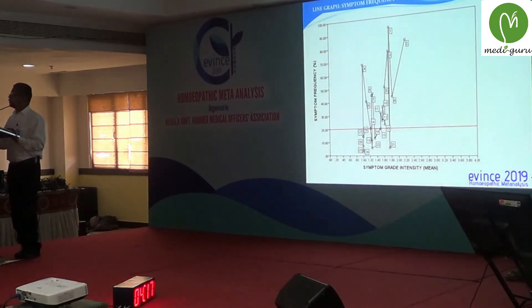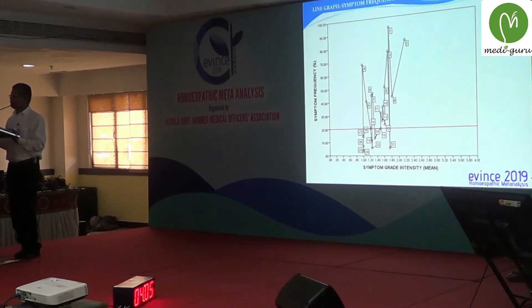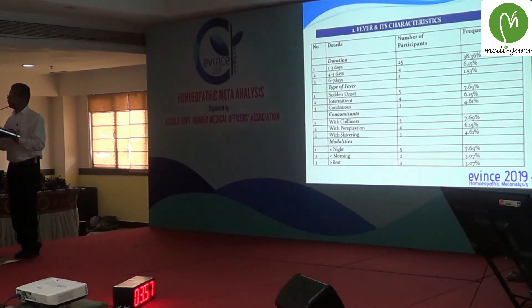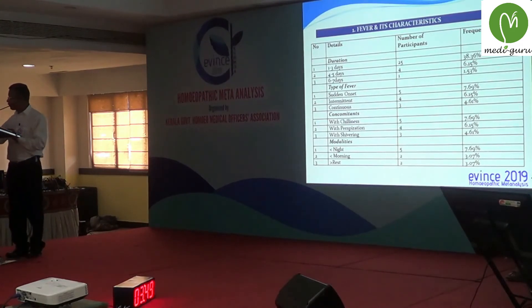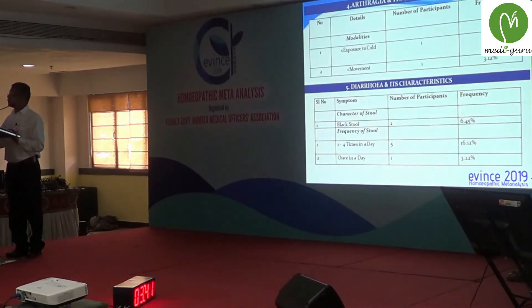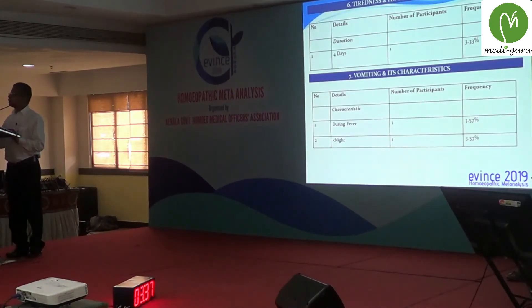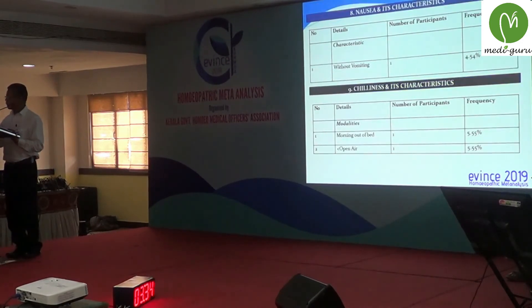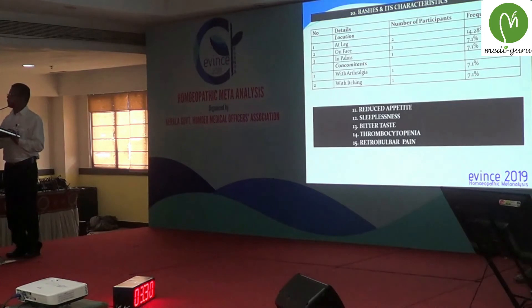A line graph plots symptom frequency against symptom grade intensity, with mean symptom intensity on the X-axis and symptom frequency on the Y-axis. The 15 selected symptoms with their characteristics are: Fever (duration, type, concomitants, modalities), Headache, Myalgia, Nausea, Arthralgia, Diarrhea, Tiredness, Vomiting, Chilliness, Reduced Appetite, Sleeplessness, Bitter taste, Thrombocytopenia, and Retro-orbital pain.